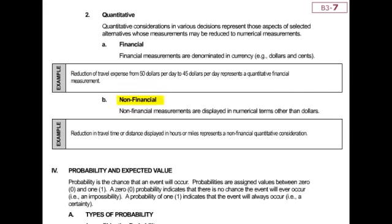Letter B: sometimes quantitative information can be measured numerically but not in a currency. Do you all see where it says non-financial to the right of that? Maybe we're going to measure it in terms of time — it could be units produced. So if we could produce it more efficiently, maybe we could save time. That's a relevant cost time-wise measured numerically, producing it in five hours versus eight hours. And the number of units produced — can we produce 12 units or 15 units? Again, quantitative in nature, numerical measurement, but not measured in dollars.